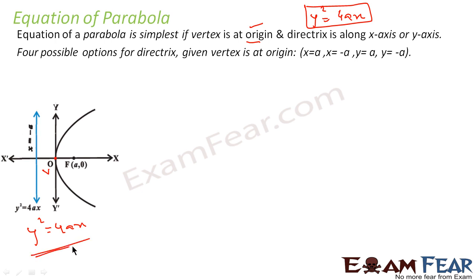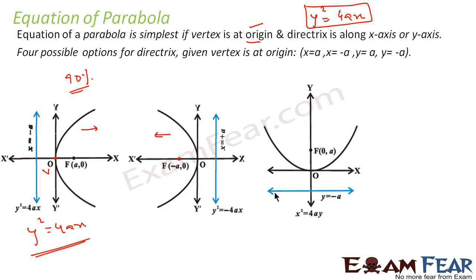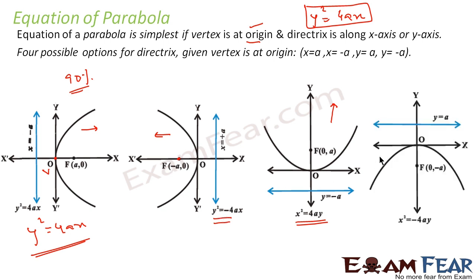This is the most common formula for parabola — in 90% of cases we will use this diagram only, where the parabola opens towards the right. In the second case, the parabola opens towards the left, the focus is (−a, 0), and the equation is y² = −4ax. We can also have a parabola where the directrix is y = −a, the parabola opens upward, the focus is (0, a), and the equation is x² = 4ay. The fourth case has directrix y = a, focus (0, −a), and equation x² = −4ay.